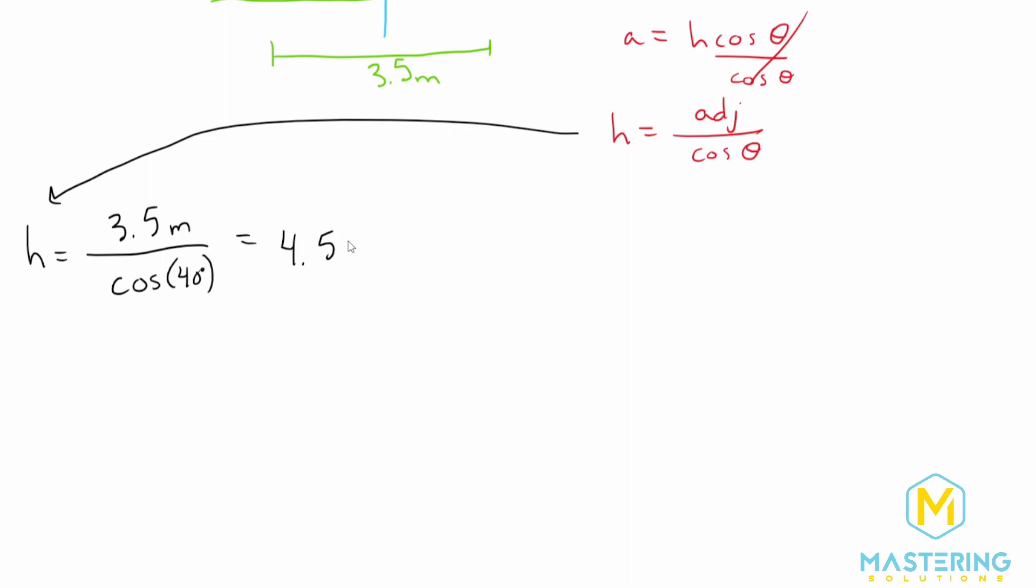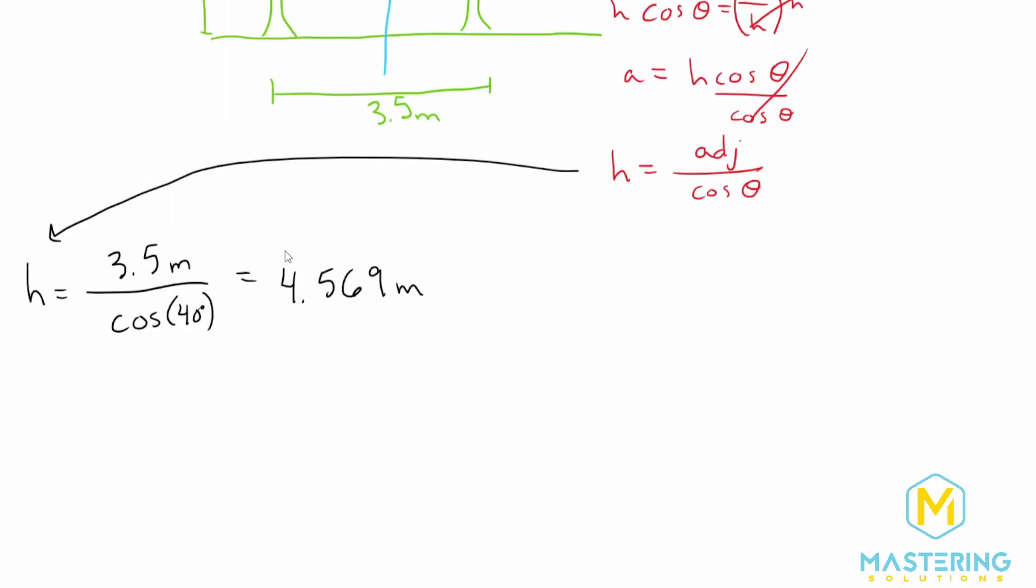So rounding, I'll actually leave it 5, 6 rounding from the 8 up to 9 meters. So we have 4.569 meters for the path length of the squirrel.